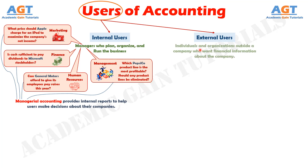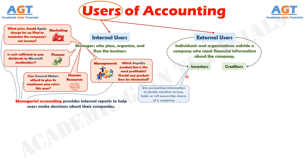External users are individuals and organizations outside a company who want financial information about the company. The two most common types of external users are investors and creditors. Investors, who are owners, use accounting information to decide whether to buy, hold, or sell ownership shares of a company. Creditors such as suppliers and bankers use accounting information to evaluate the risks of granting credit or lending money.